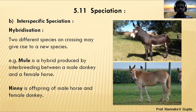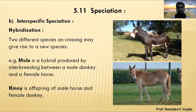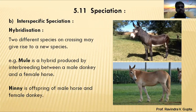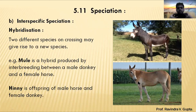The second example is a hinny. A hinny is the offspring of a male horse and a female donkey — the vice versa of mule production. When we cross a male horse and a female donkey, whatever new organism we get is called a hinny, as shown in the second diagram. This concludes the topic of speciation.